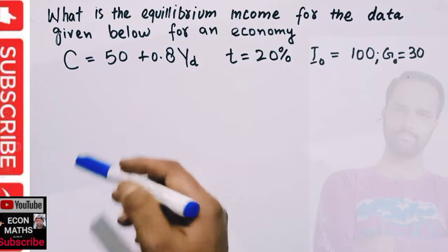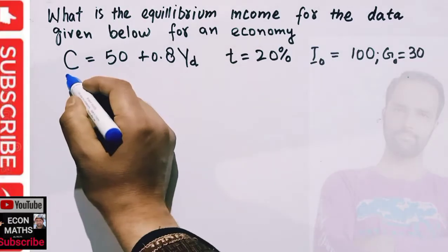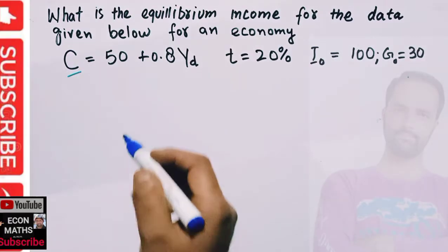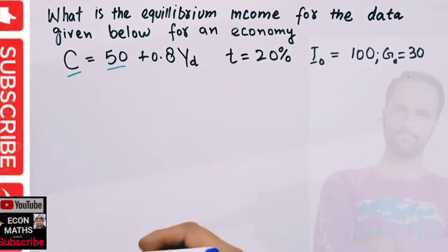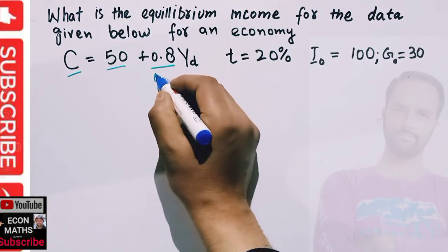We are given this data: C = 50 + 0.8Y_d. This C is our consumption expenditure. 50 is our autonomous consumption that does not depend upon the level of income, and 0.8 is the marginal propensity to consume.